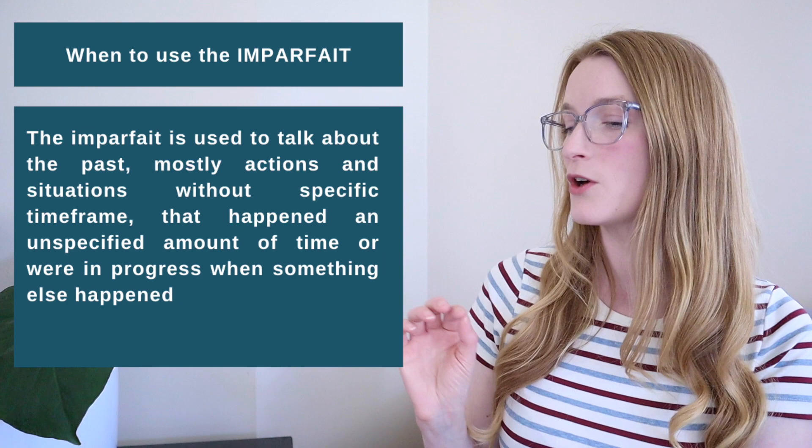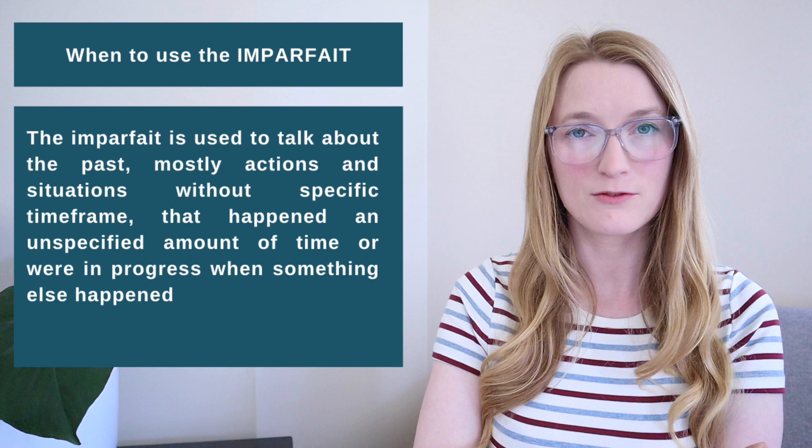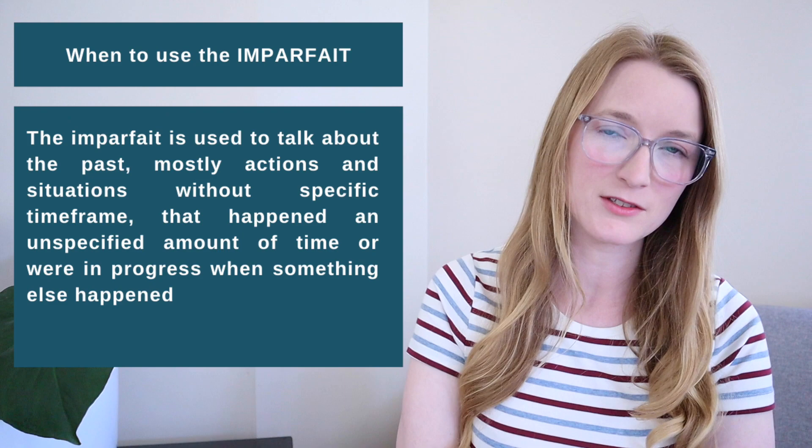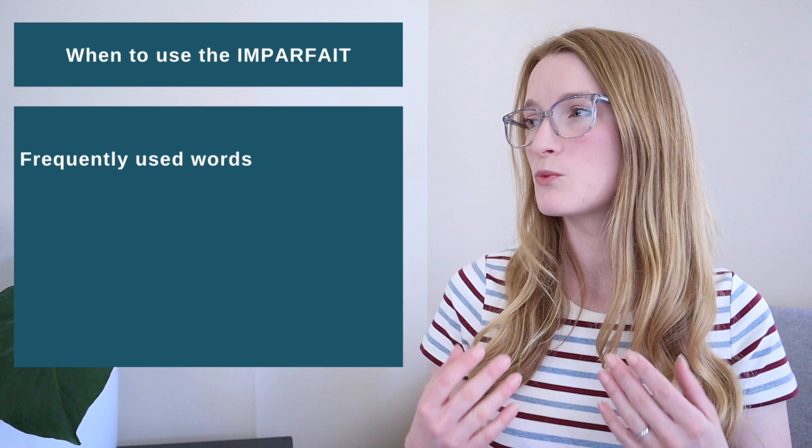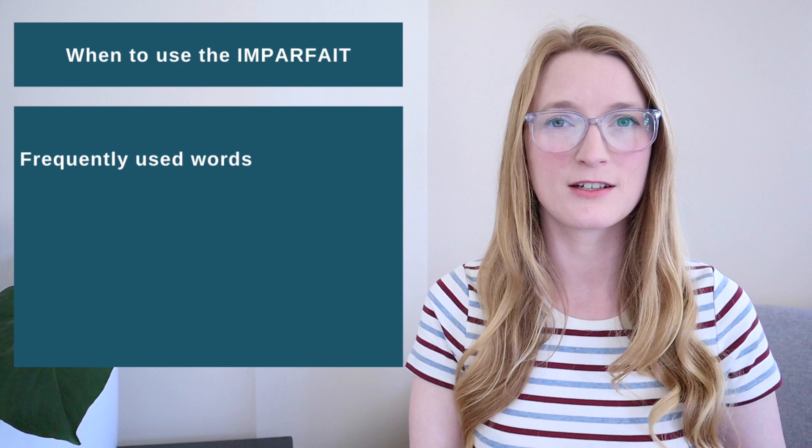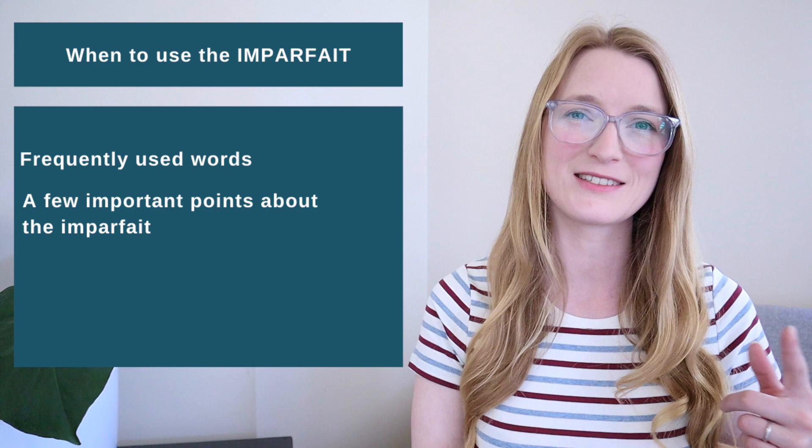The imparfait is used to talk about the past — mostly actions and situations — without a specific time frame. This is very important: without a specific time frame. It's used for things that happened an unspecified amount of time, or when something was in progress when something else happens. In this lesson we are going to see frequently used words — the words you'll usually find with the imparfait — and a few important points at the end.